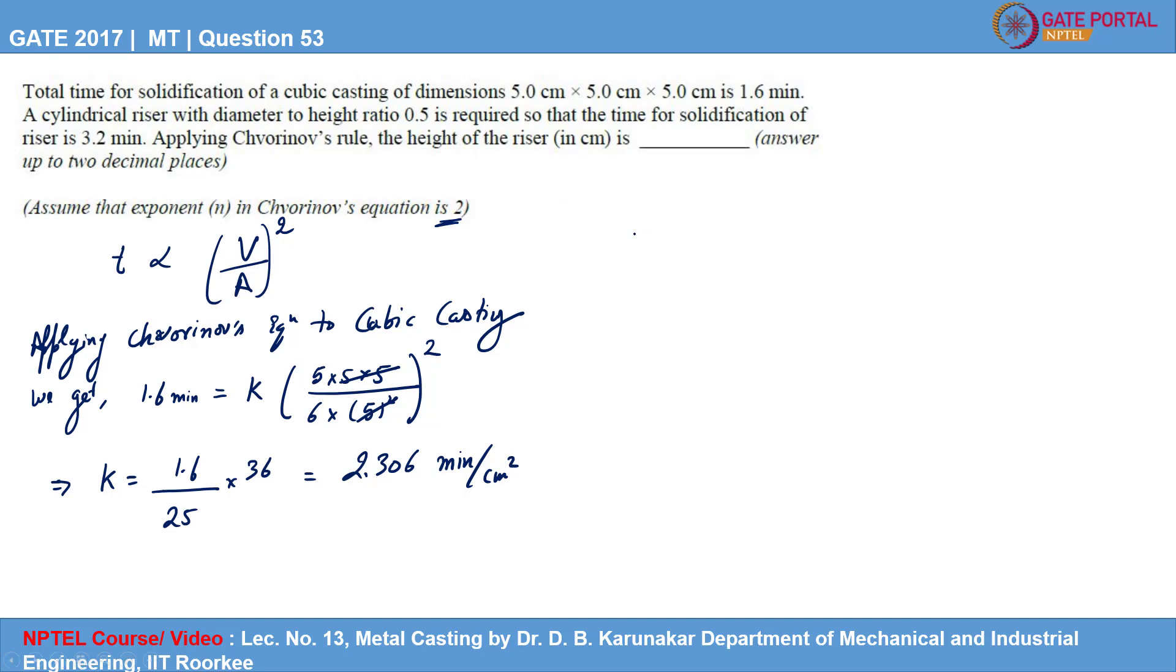Now I will apply Chernivov's rule to the cylindrical riser to determine its height. So applying Chernivov's rule to the riser, we get 3.2 minutes is the solidification time for the cylindrical riser. It must be equal to K into V upon A square. The value of K we have determined from the cubic casting: 2.306.